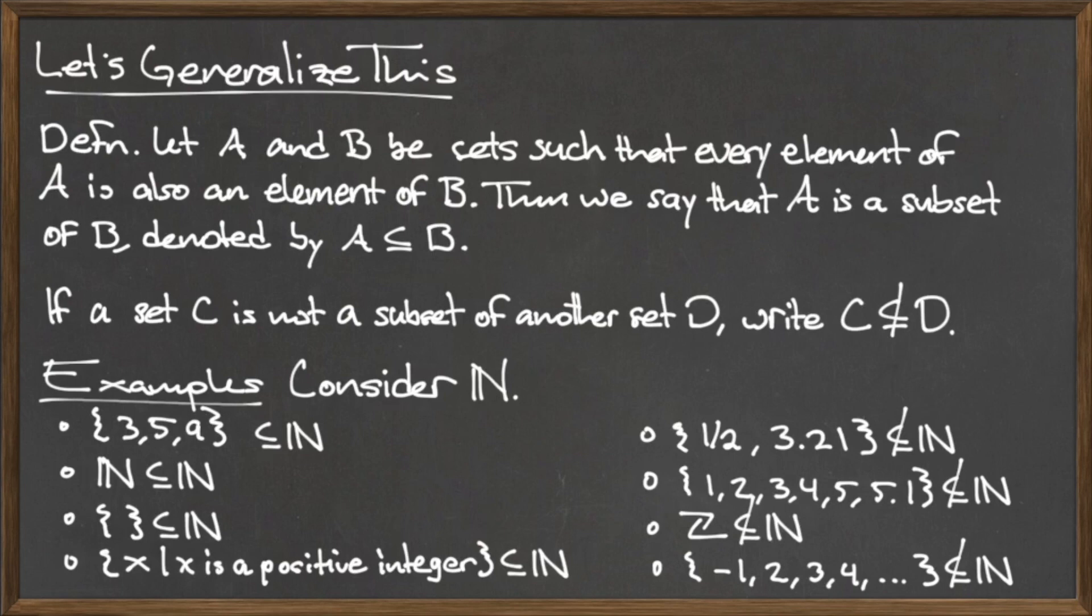The first concerns the natural numbers themselves. We said that the natural numbers are a subset of the natural numbers. In fact, this is true for any set. Any set is a subset of itself.